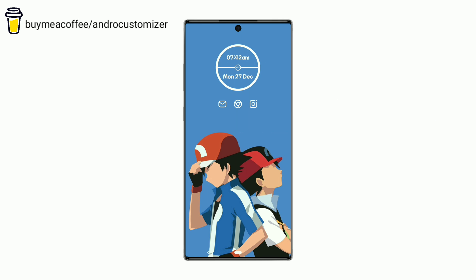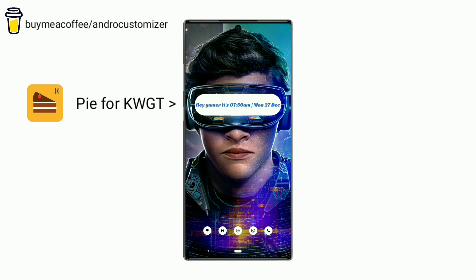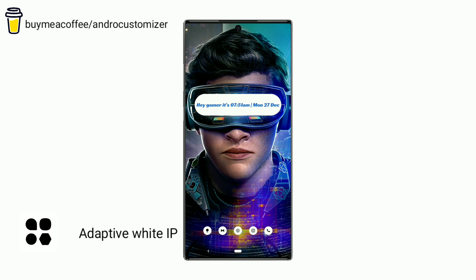Now let's see the second setup. This widget shows information as usual — that is time, day, date, and month. The icon pack used here is Adaptive White.